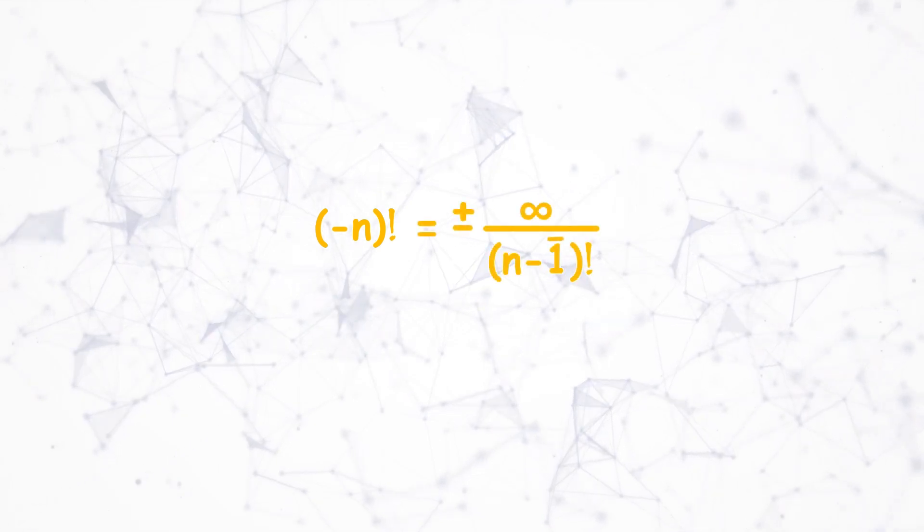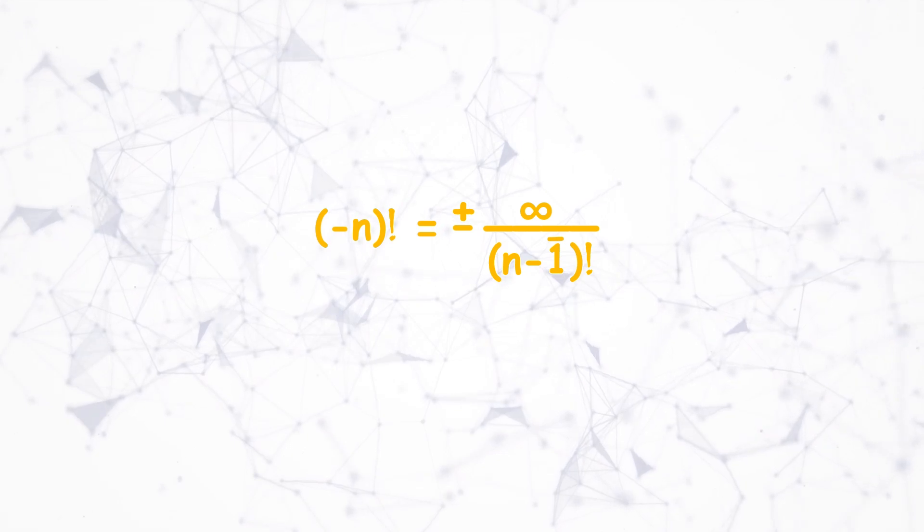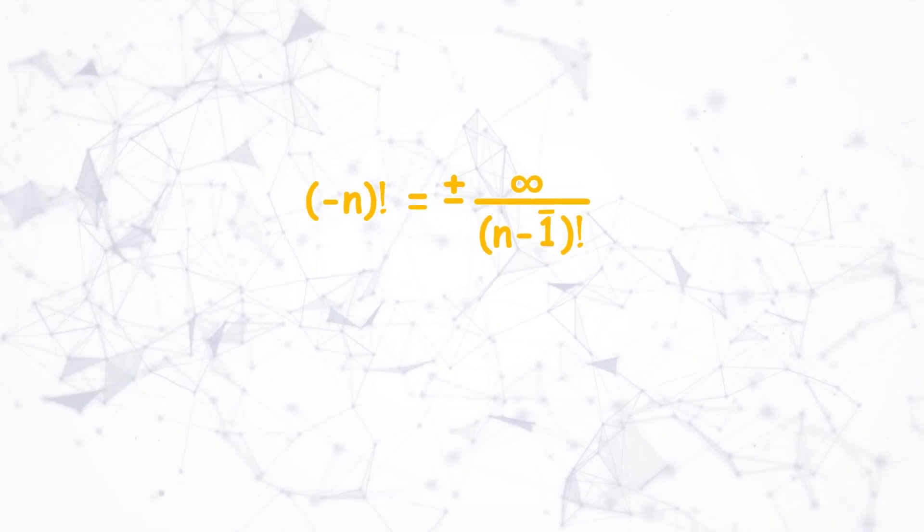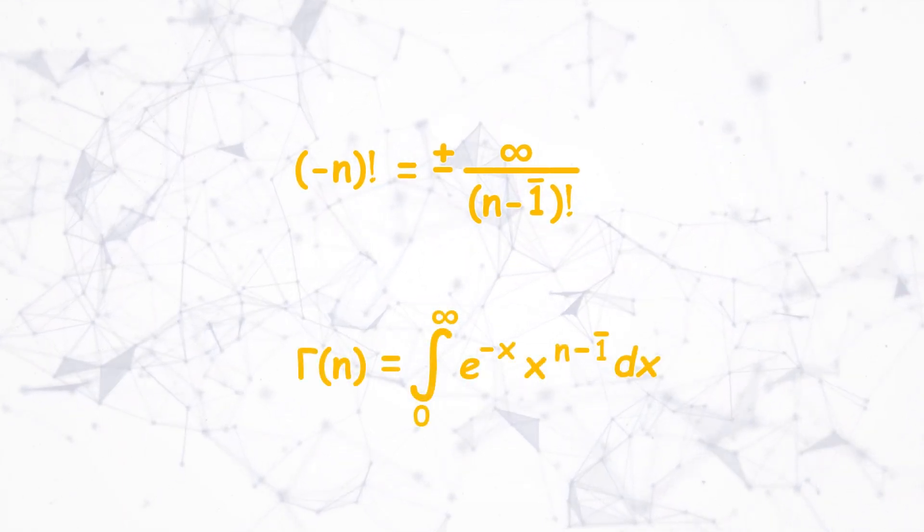The newly discovered formula for negative factorial is plus or minus infinity by n minus 1 factorial. In this video we will see the overview of how it is proven and then compare its result with gamma function to see if both results are matching or not.